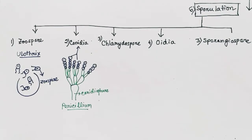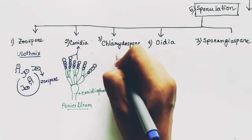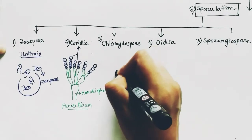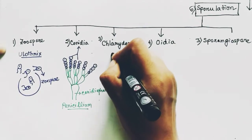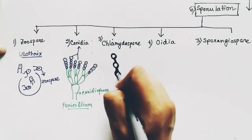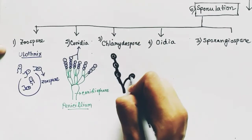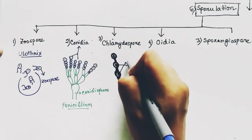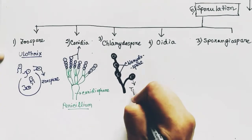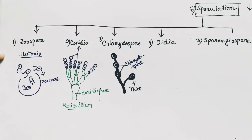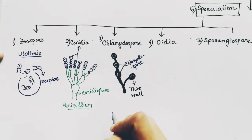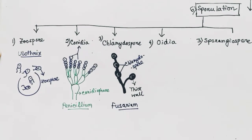The third type is the chlamydospore. These spores are resting spores, but they have thick walls surrounding the spore. The thick walls enclose the resting spore inside. An example of chlamydospore is Fusarium.